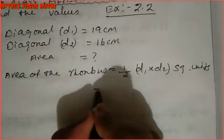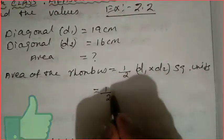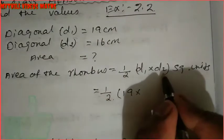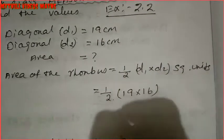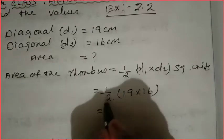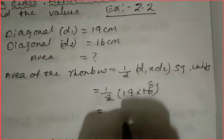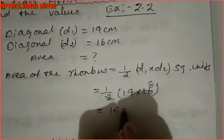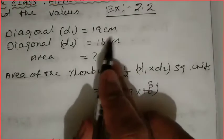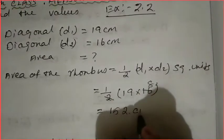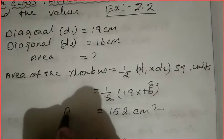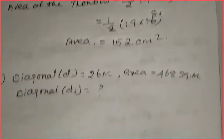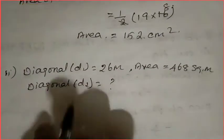So this is equal to 1/2 × d1 × d2. Instead of d1 we write 19 and instead of d2 we write 16. We cancel: 2 eights are 16, so 2 cancels with 16 to give 8. Then 19 × 8 = 152. Since the units are cm × cm, we write cm square. Therefore, area = 152 cm².